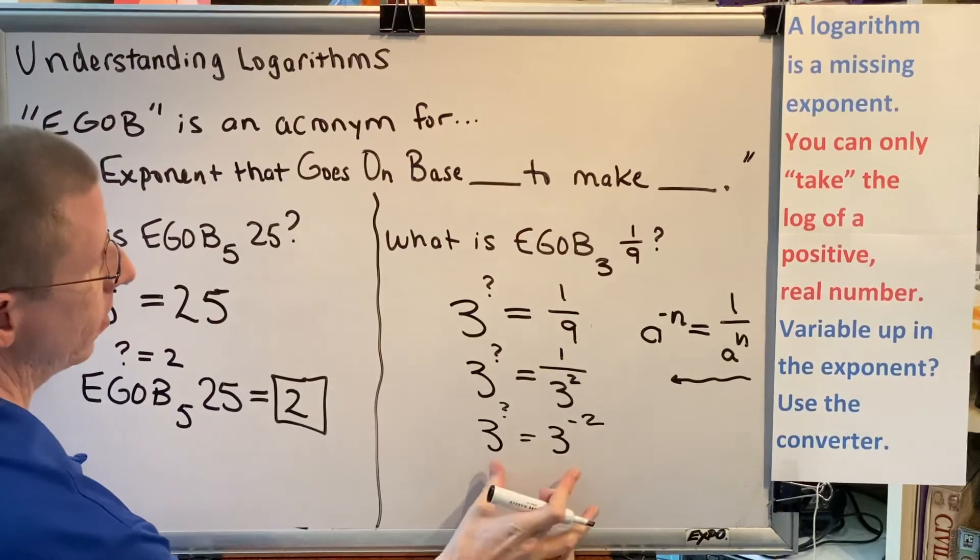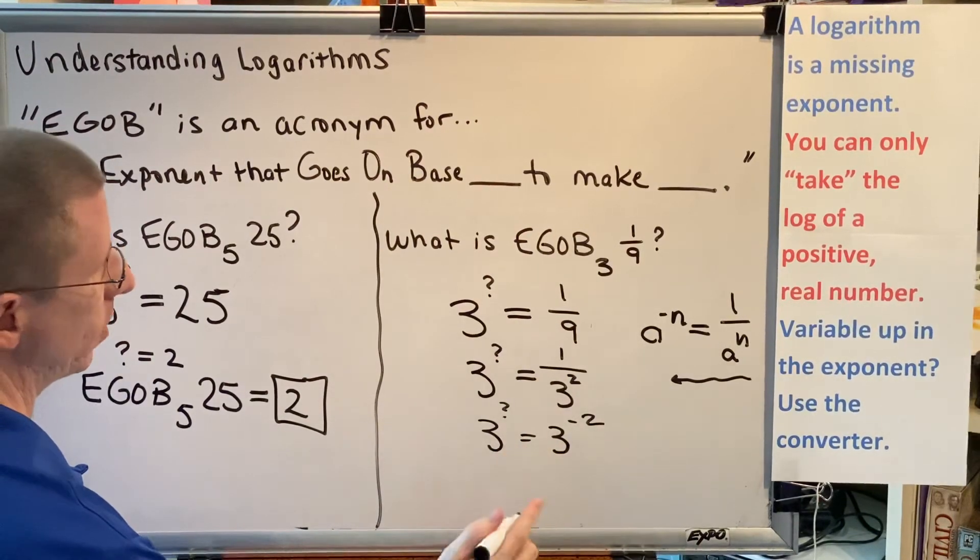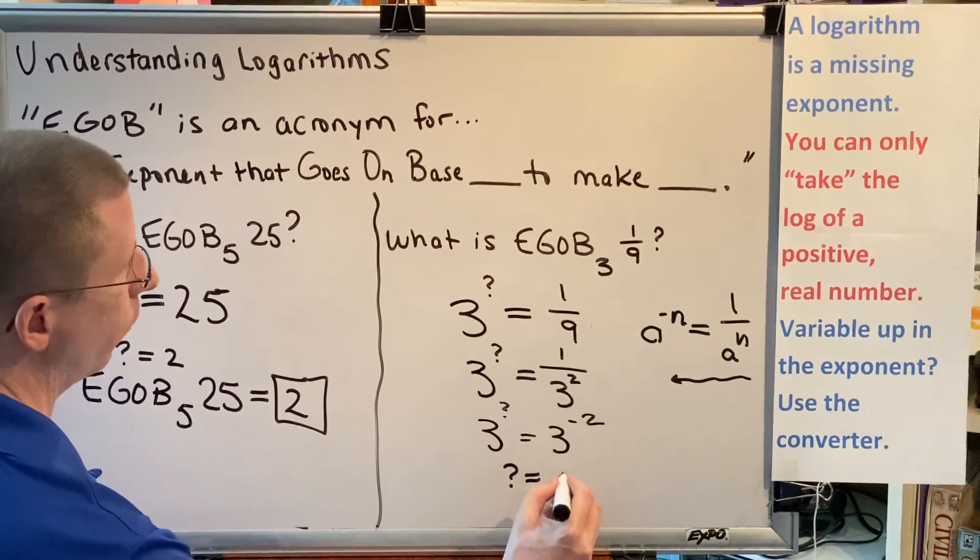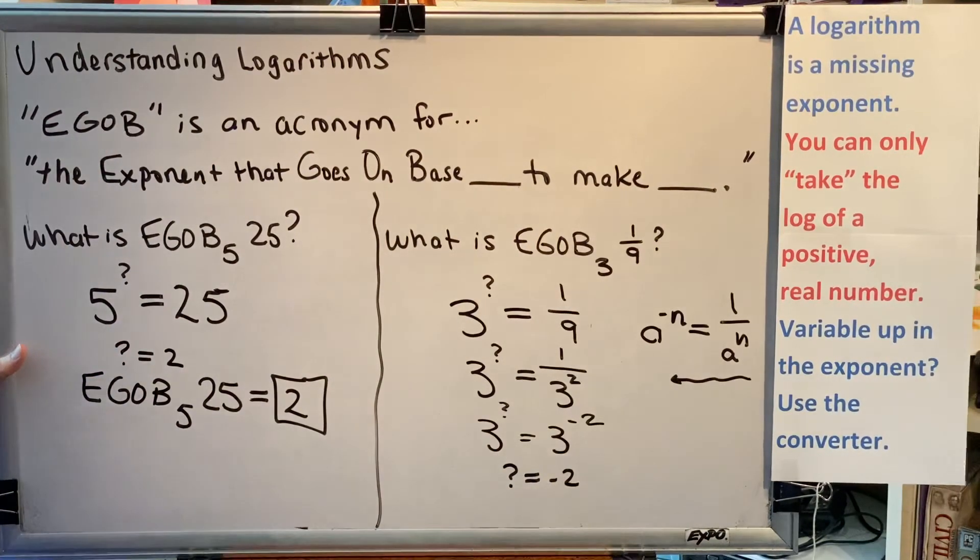Now, by the law of exponents, since the bases match, the exponents must be equal. Therefore, the value of the question mark, the value of the missing exponent, is negative 2.